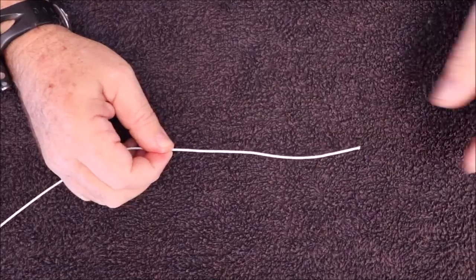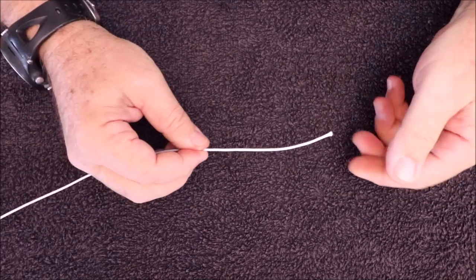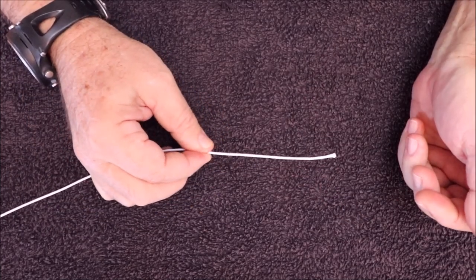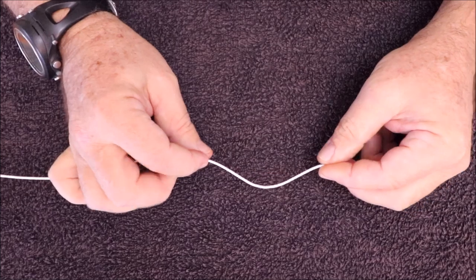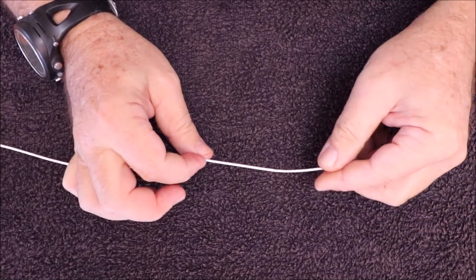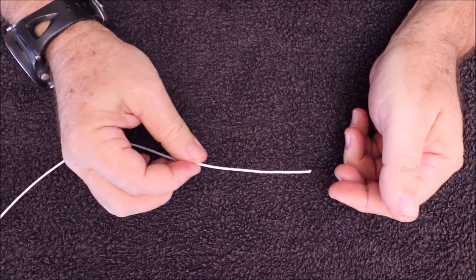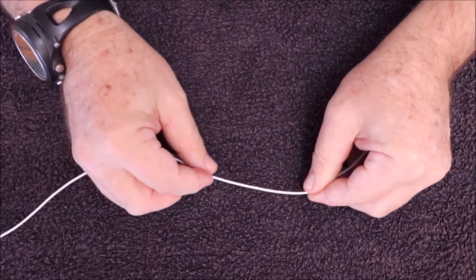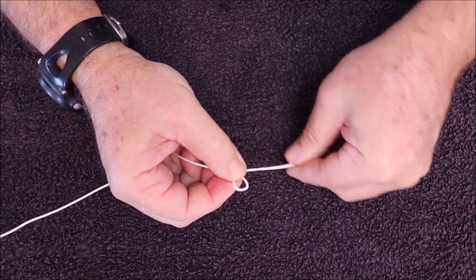To tie the knot, we use our standard Dyneema spear line—the same Dyneema we use on all our wishbones. We use a knot similar to what we would use when tying the Dyneema onto the gun. Simply throw two loops.